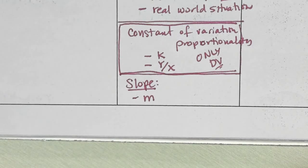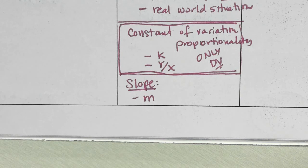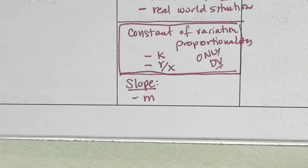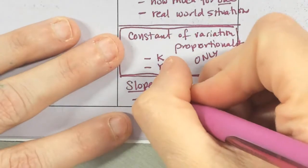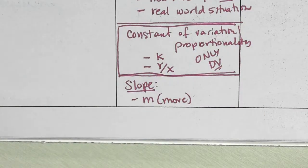Slope is represented by the letter M. Why is it represented by M? I'm not quite sure — I Googled it once and didn't get a clear answer. Basically what I saw was that M was the next letter that wasn't being used. The way I think of it is M tells me how to move — how I move from point to point on the line. So I'm going to write 'move' because the slope tells me how to move.